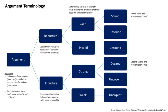A statistical syllogism proceeds from a generalization to a conclusion about an individual. Example: 90% of graduates from Excelsior Preparatory School go on to university; Bob is a graduate of Excelsior Preparatory School; therefore, Bob will go on to university. This is a statistical syllogism. Even though one cannot be sure Bob will attend university, we can be fully assured of the exact probability for this outcome given no further information. Typically, inductive reasoning seeks to formulate a probability. Two dicto simpliciter fallacies can occur in statistical syllogisms, which are called accident and converse accident.